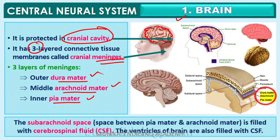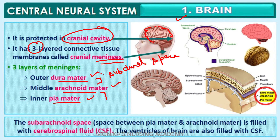The space between the dura mater and the arachnoid mater is termed as the subdural space. The space between the arachnoid mater and the pia mater is termed as the subarachnoid space. The substance present within these spaces is CSF, which is termed as cerebrospinal fluid.